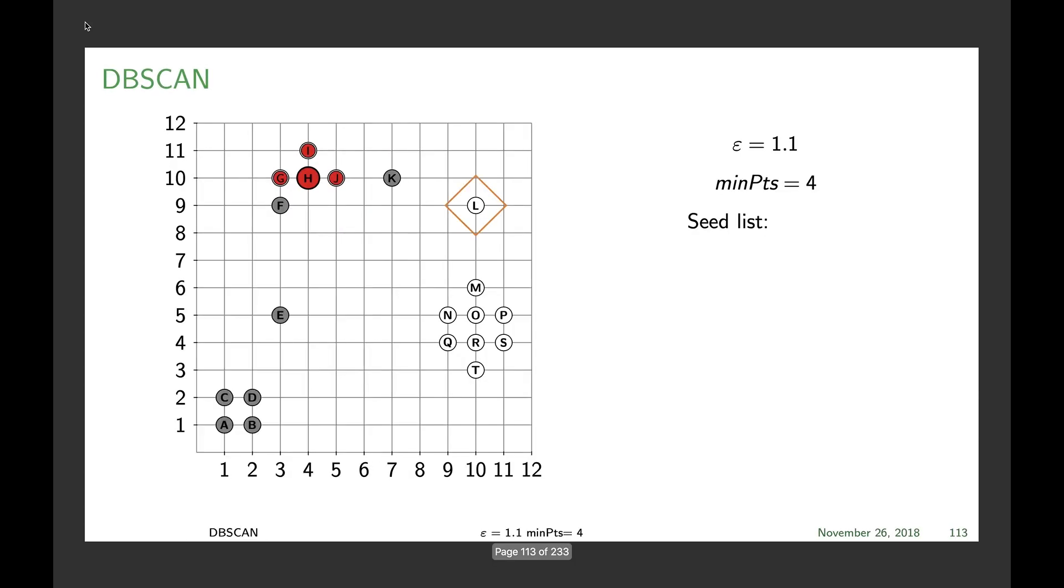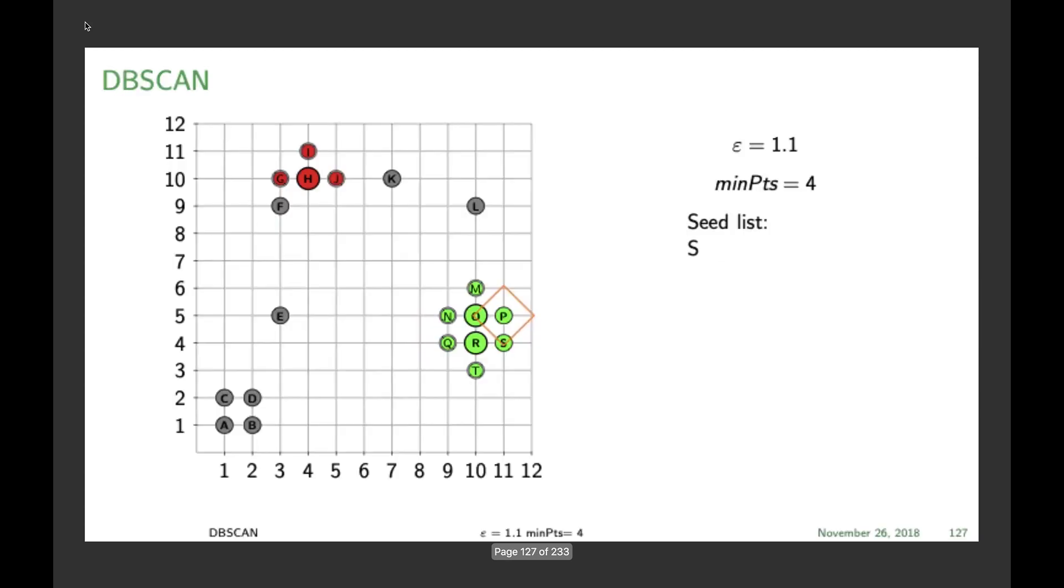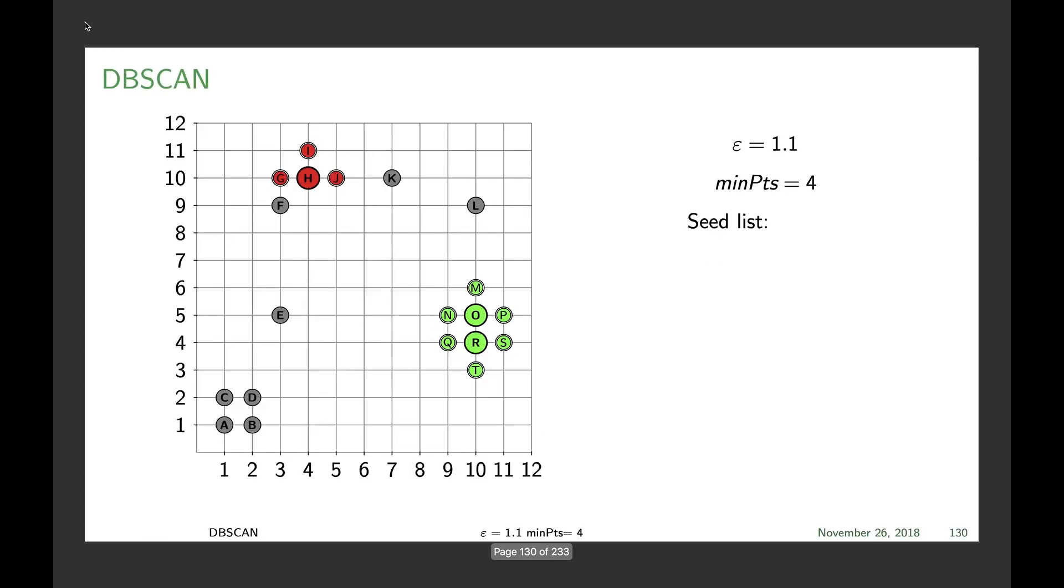K and L remain noise points, and then M becomes a noise point for the moment. We check O, O becomes a core point making M a border point. R becomes a core point and all the others are border points. And here's our clusters. In this case only two.